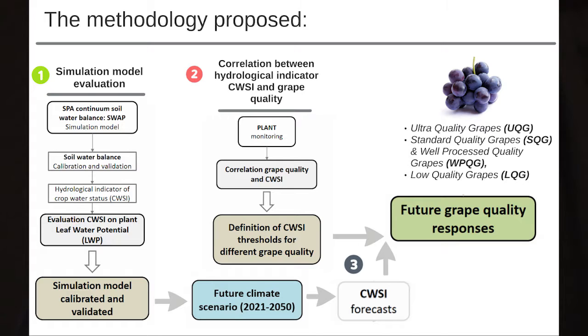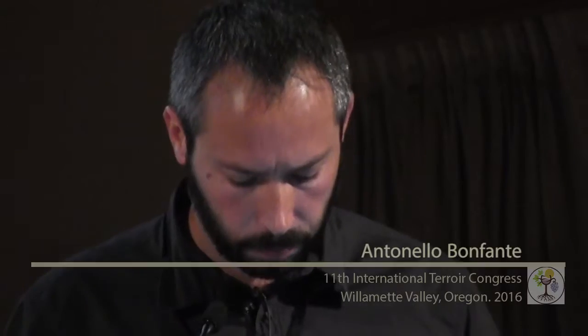Why have we used this index? Because in the literature there are many works showing a link between water stress and grape quality, and this link was also validated within this work. The methodology proposed is based on three steps. The first step was the simulation model evaluation — the model was calibrated and validated.